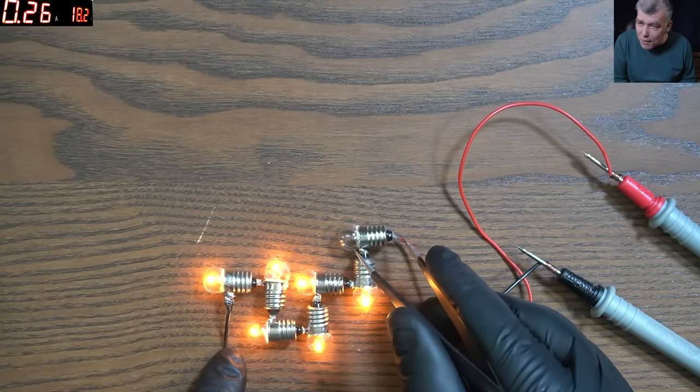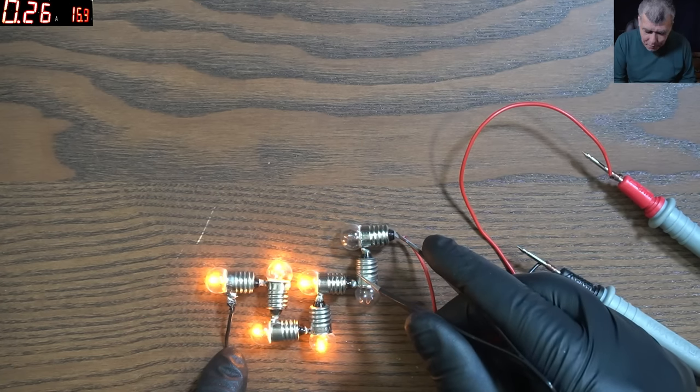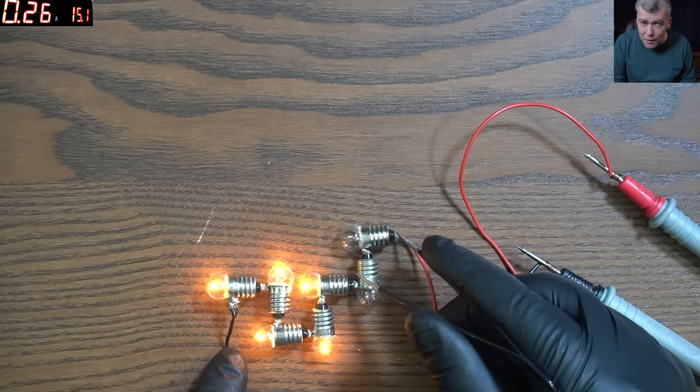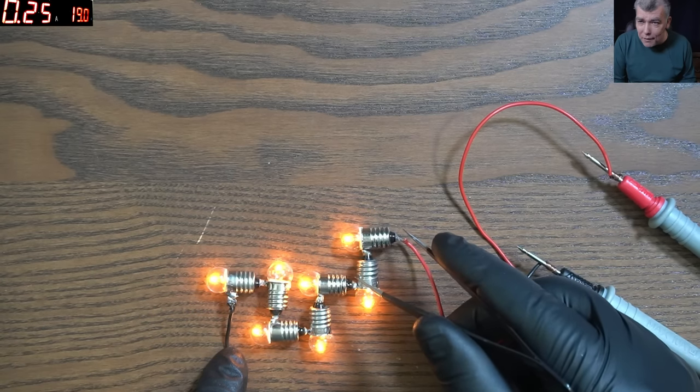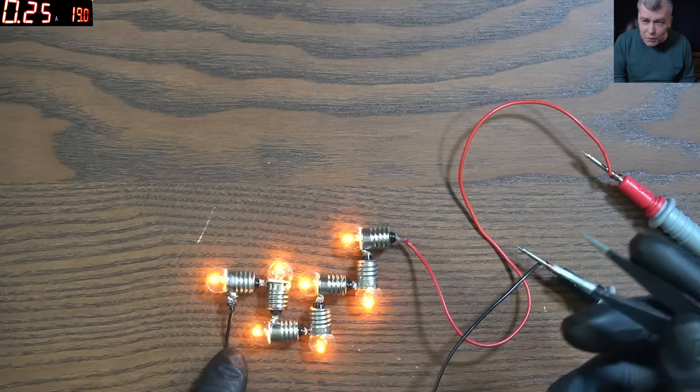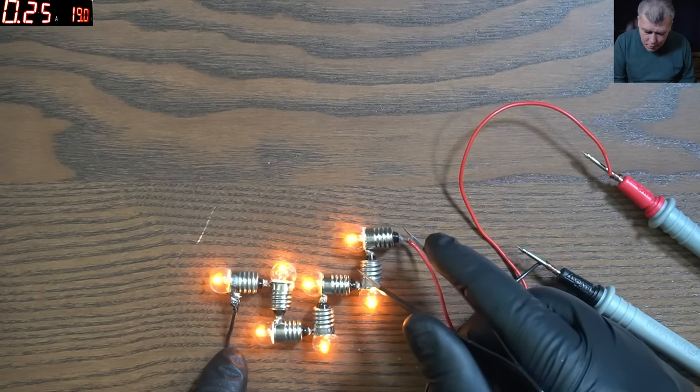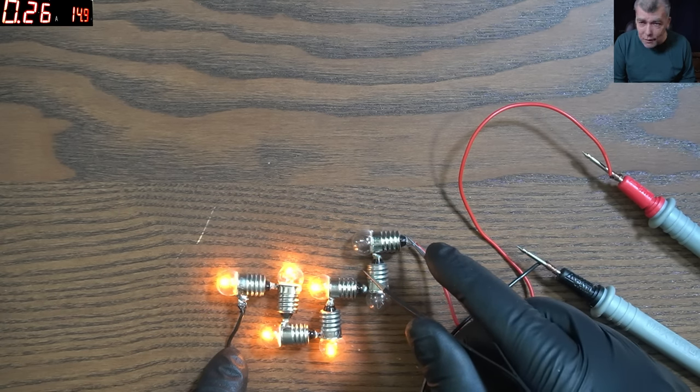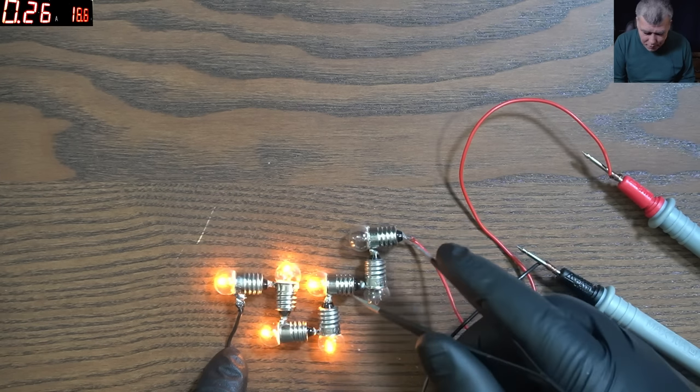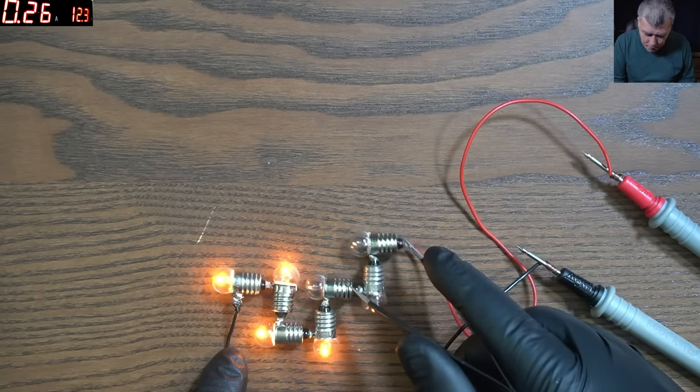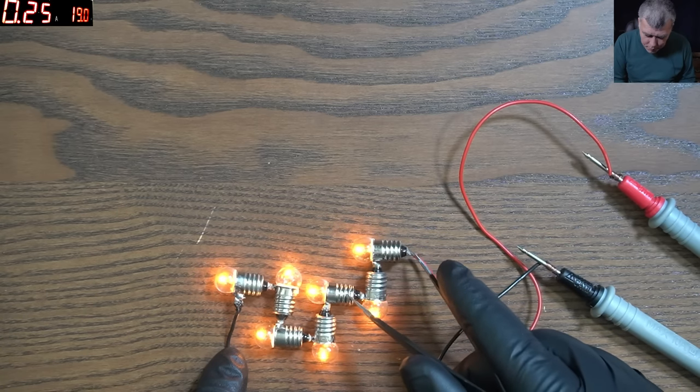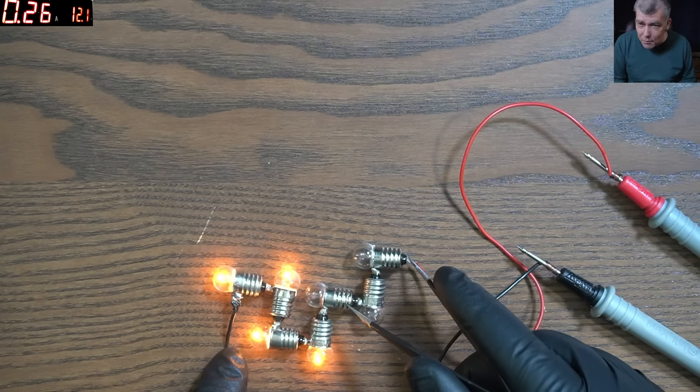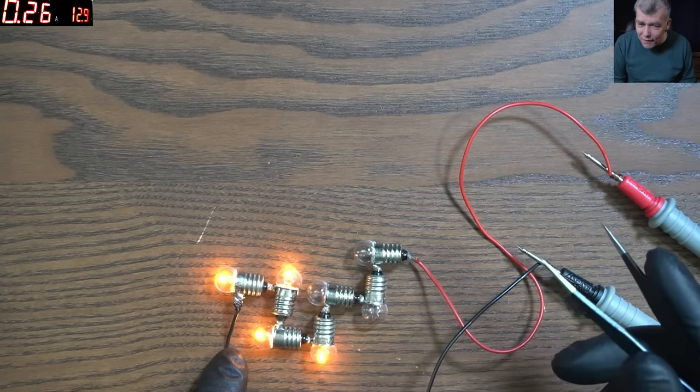Let's short one light bulb and you can see the other light bulbs are the same. Let's short two and you can see the output from the other light bulbs is the same. Now pay attention on the current. You see it's 260 milliamps, 250 milliamps, constant current. But when we are shorting, the voltage gets dropped. It's only the current that's stable.